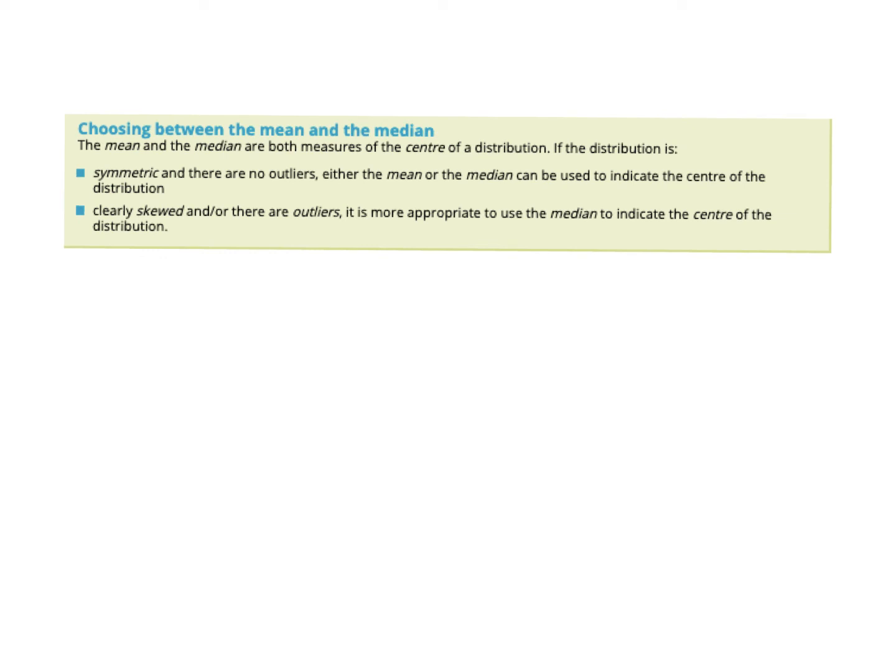So just summing up, the mean and median are both okay for measures of center if it's symmetric. If there's symmetric and no outliers, because even if it's symmetric, but we have an outlier, it's not going to be good to use the mean. We're going to have to go back to the median.